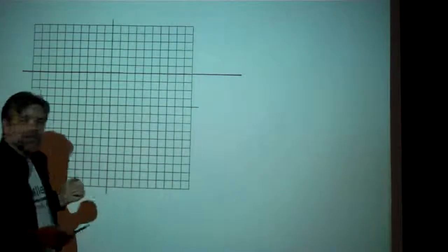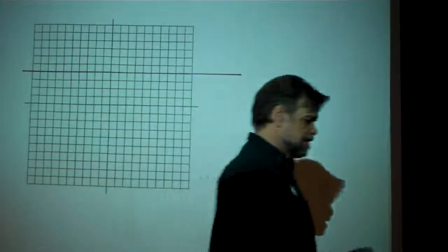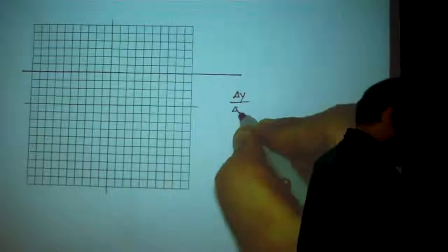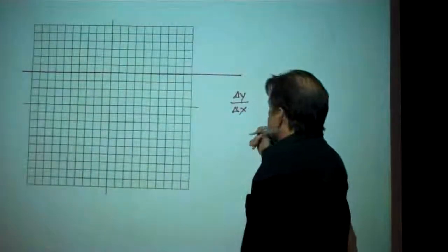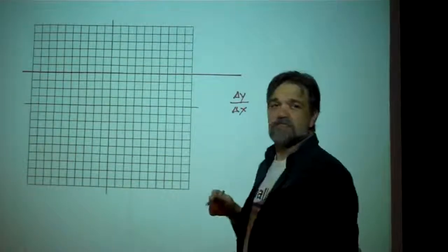Now, usually, what I do to calculate the slope is I look at the change in y divided by the change in x. That's weird on this one because the change in y doesn't seem to be changing.